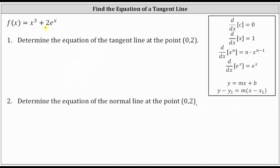We are given f of x equals x cubed plus two e to the x. Number one, we're asked to determine the equation of the tangent line at the point zero comma two, and number two, determine the equation of the normal line at the point zero comma two. The normal line is the line perpendicular to the tangent line at the point zero comma two.